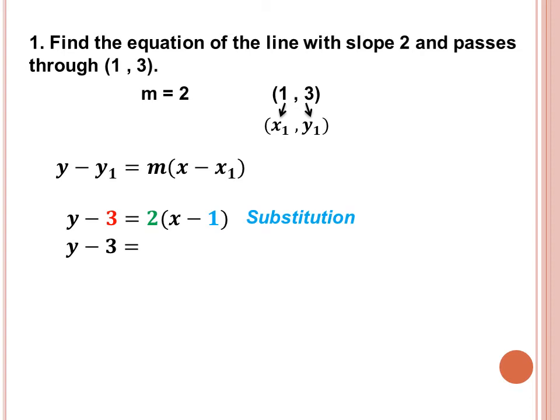After substituting the values, we need to multiply 2 to x minus 1. So 2 times x is 2x, followed by 2 times negative 1, which is negative 2. This process is known as the distributive property — we distribute 2 to x minus 1.